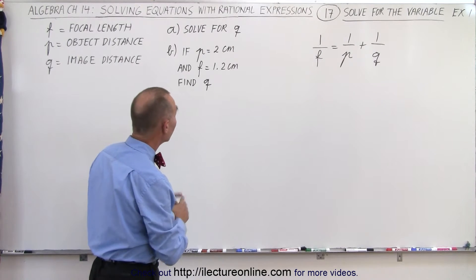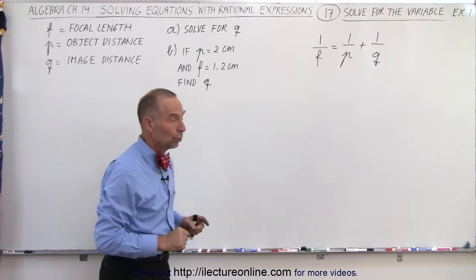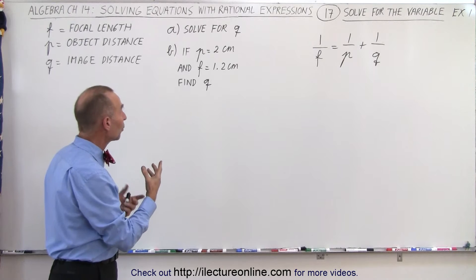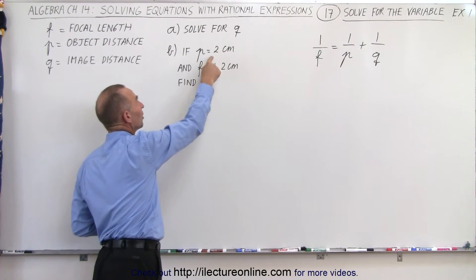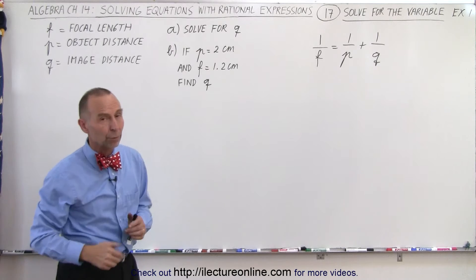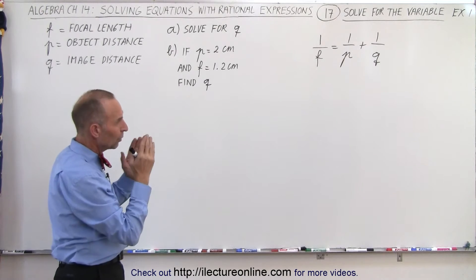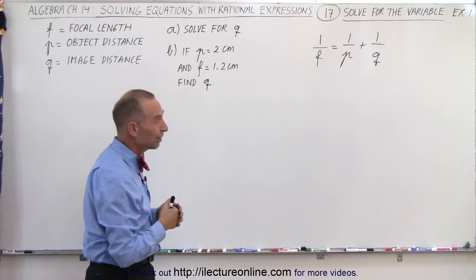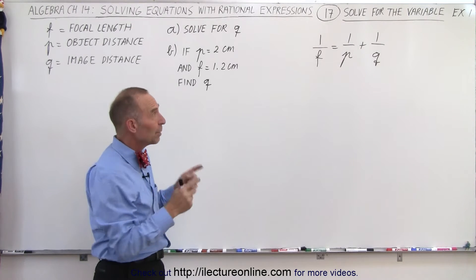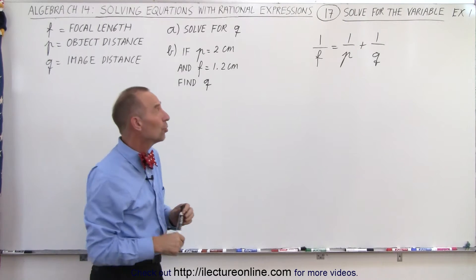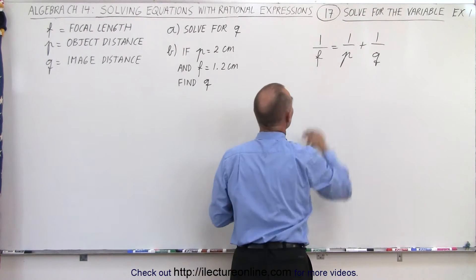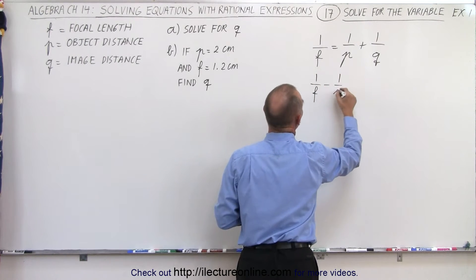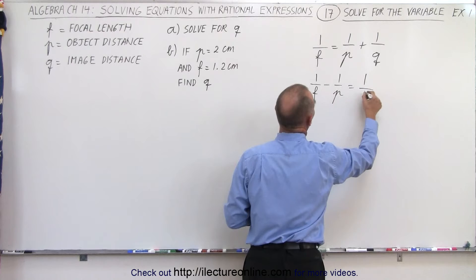First, what they want us to do is solve that equation for Q. So, let's do part A first. How do we solve that equation for Q? Well, the first thing to do probably would be to isolate the term that contains the Q by moving the 1 over P to the other side. So, we can say that 1 over F minus 1 over P is equal to 1 over Q.